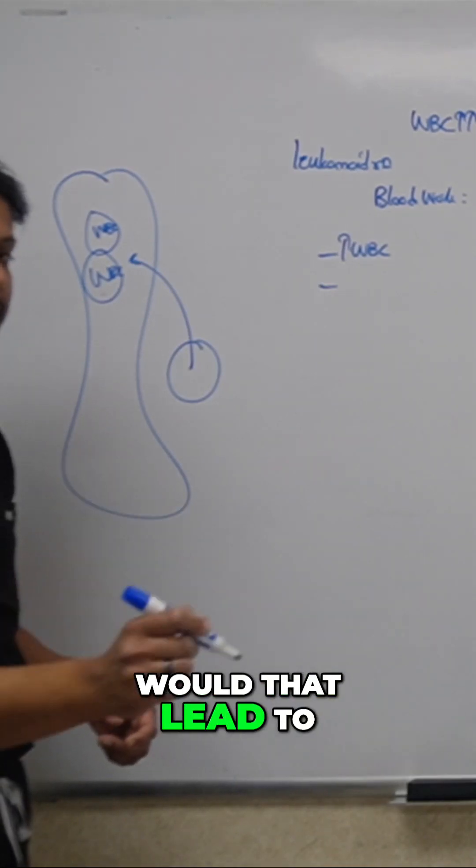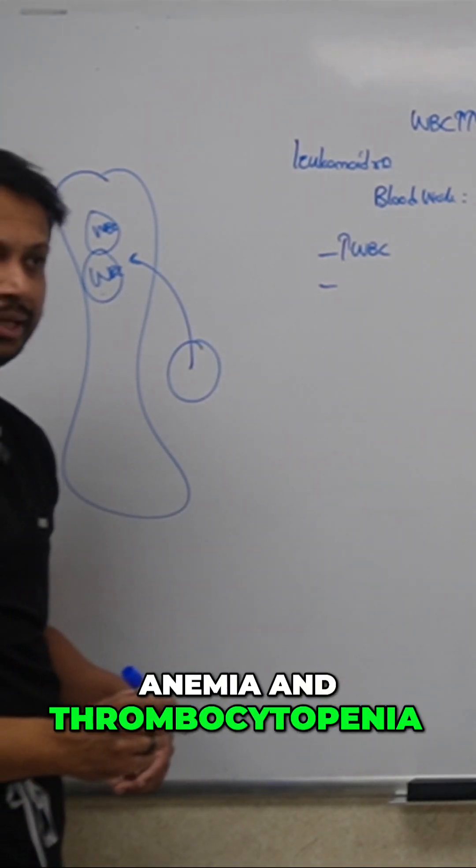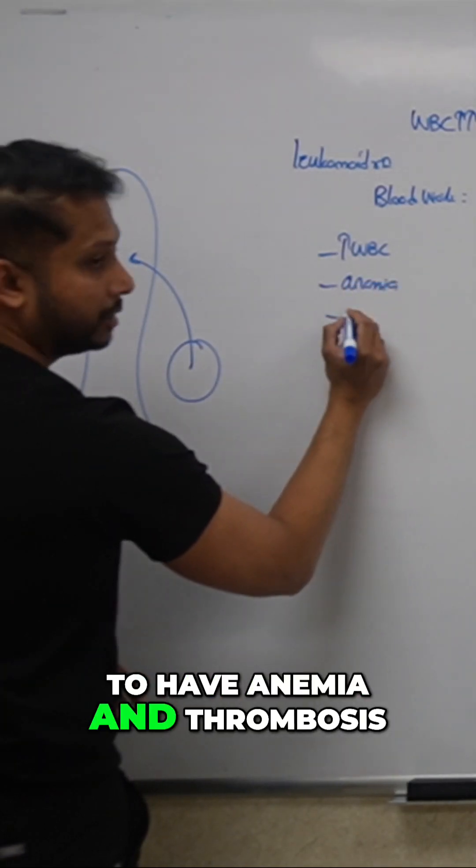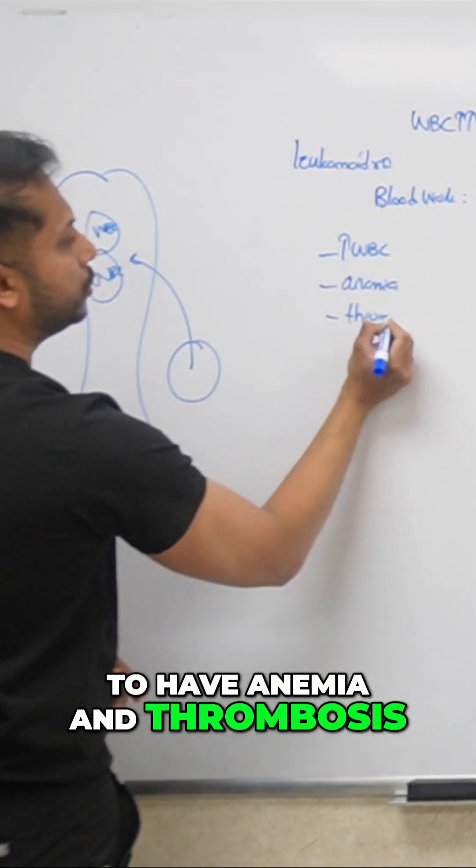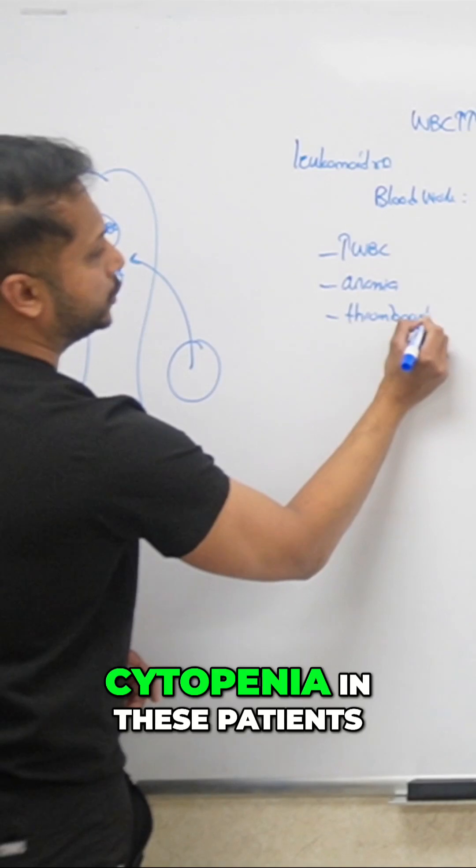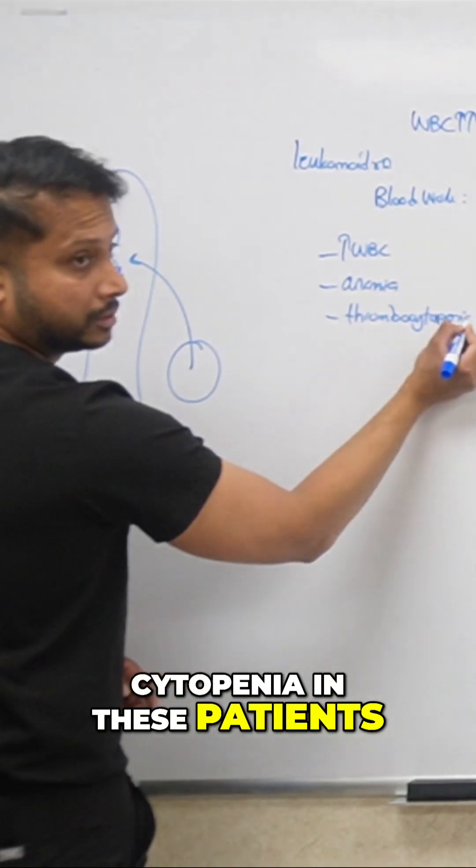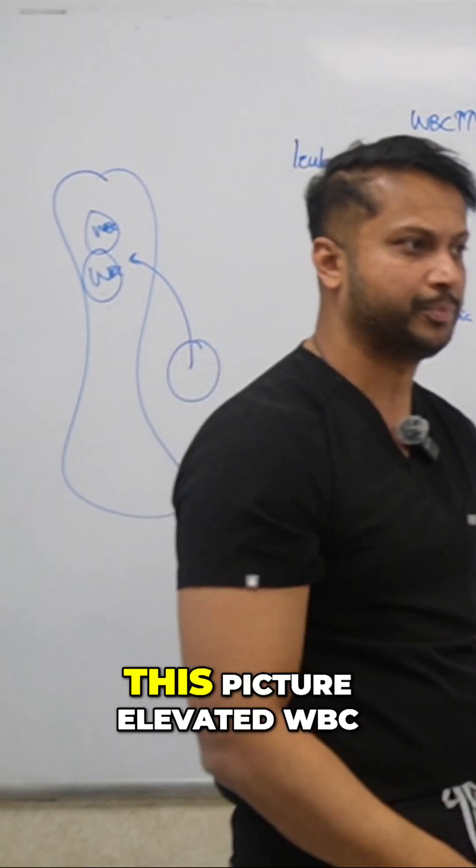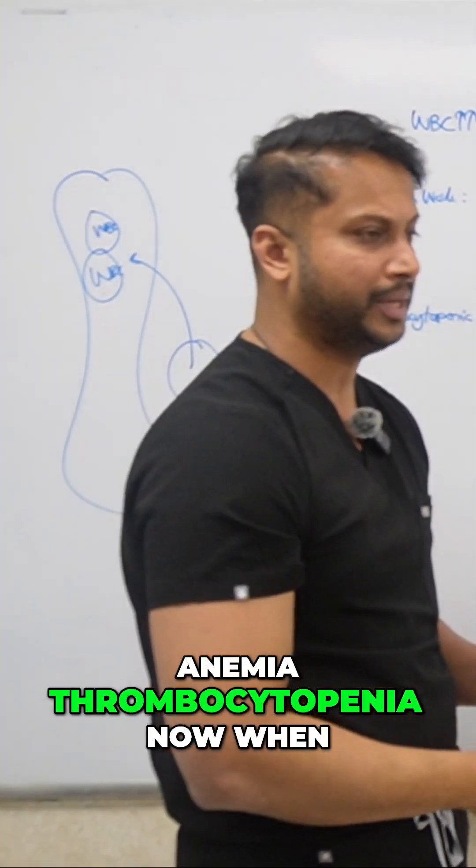Would that lead to anemia and thrombocytopenia? Yes, it would. So always you're going to have anemia and thrombocytopenia in these patients. Pretty much across the board, all leukemic patients you'll have this picture: elevated WBC, anemia, thrombocytopenia.